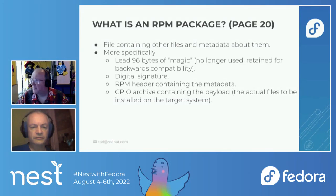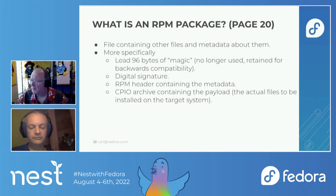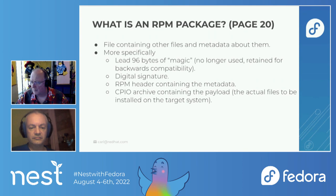What is an RPM package? It's a file that contains other files and metadata about them. More specifically, there's a lead of 96 bytes of magic kept for backwards compatibility, an optional digital signature, an RPM header containing all the package metadata, and a CPIO archive which is the actual payload — the files that get installed on the target system when you install that RPM.